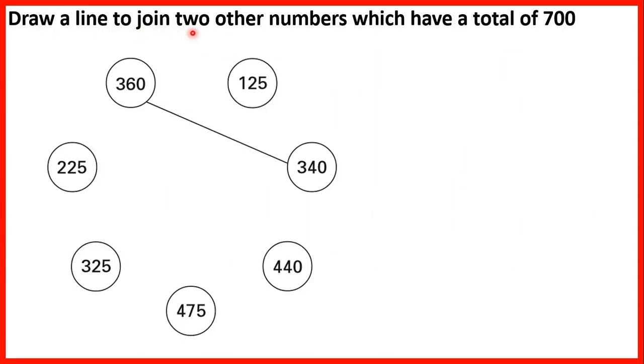Draw a line to join two other numbers which have a total of 700. So 360 and 340 have a total of 700 because if we add these numbers, we get 700. So the other numbers with a total of 700 are 475 and 225 because if we add these numbers, we get a total of 700.